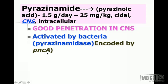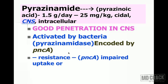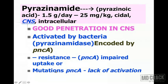The pyrazinamidase enzyme is encoded by the pncA gene. Resistance to pyrazinamide develops either through impaired uptake of the drug or through mutations in the pncA gene, which prevent the bacterial enzyme pyrazinamidase from activating pyrazinamide, rendering it ineffective.